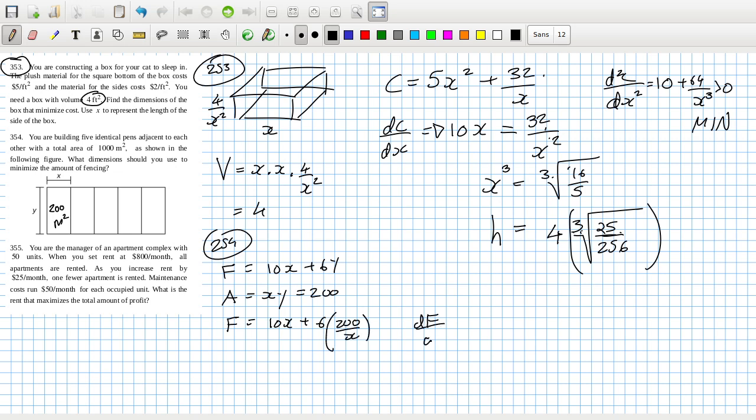So the derivative would equal 10 minus 1200 over x squared needs to equal zero. So that means x squared has to equal 120. So x will be root 120 and y will be 200 over root 120.